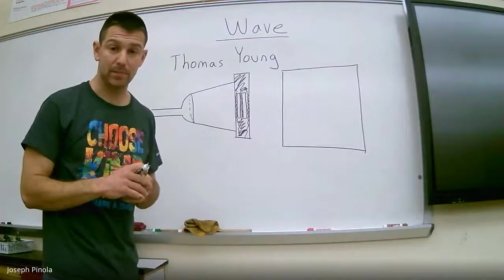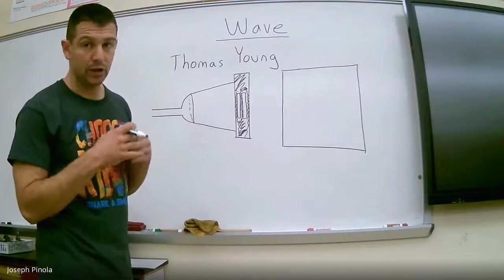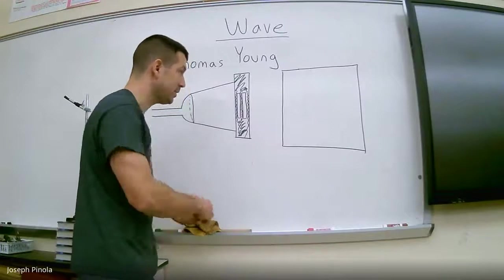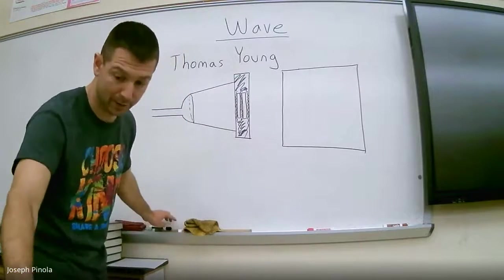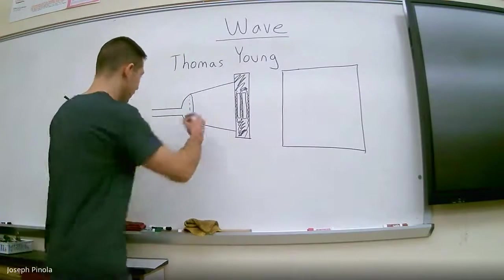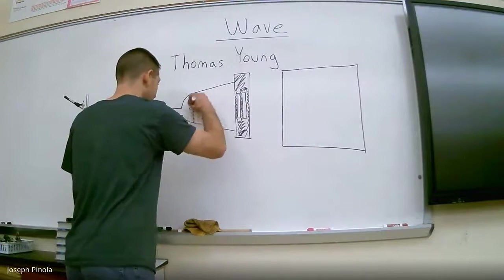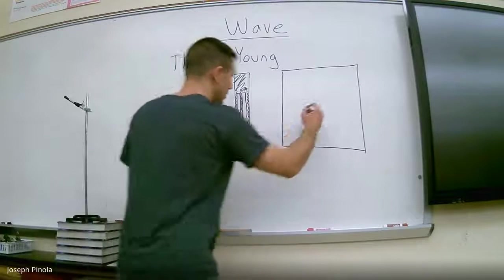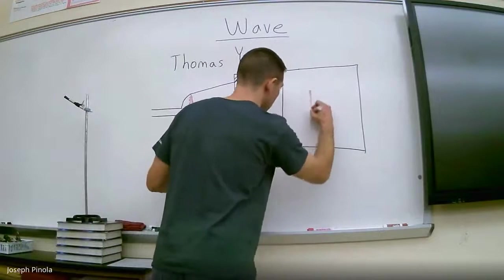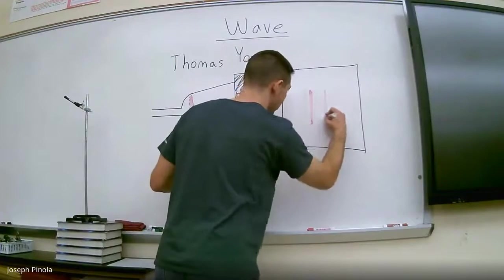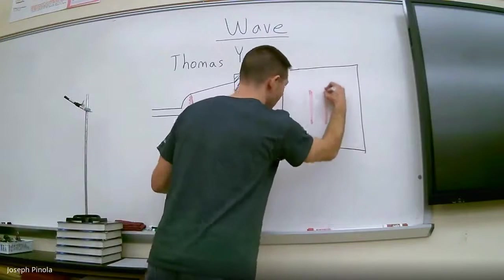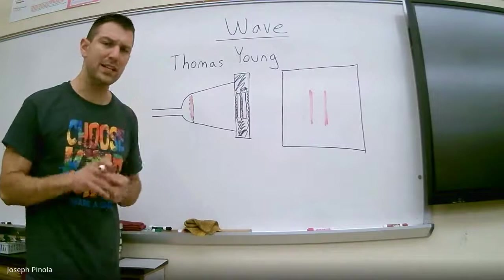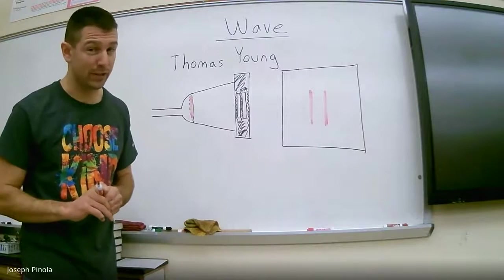And he expected that if light was composed of a bunch of different particles, that he would just simply see two lines on the other side. So for example, if he decided to use red light, Young believed that he would see two long strips of red appear on the other side. But when he did the experiment, that's not what he found.